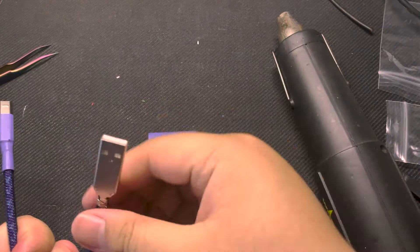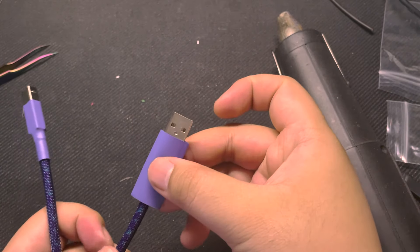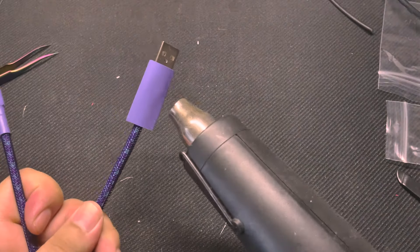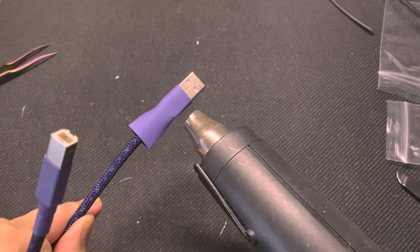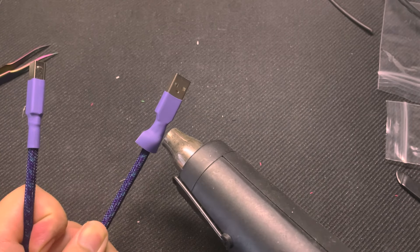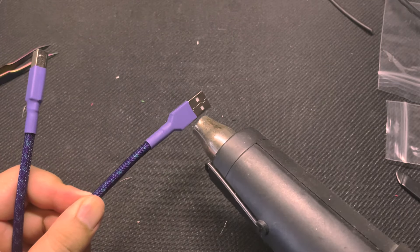And of course we gotta do this with the USB A side as well. I like to have it just a little below that indentation on the USB A type side, and we're gonna apply quite a bit of heat again to make sure we have a nice and clean heat shrink applied to our cable and make sure it looks pretty clean and useful for us for hopefully many years to come.